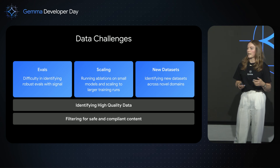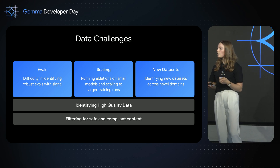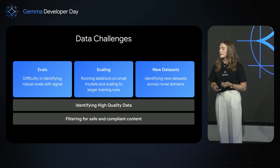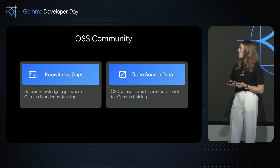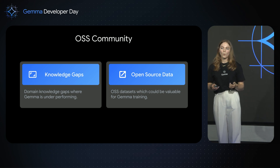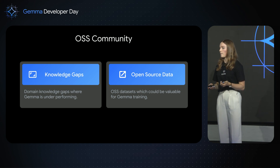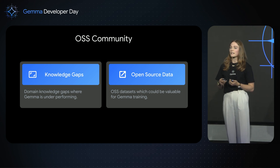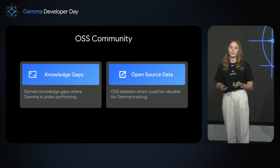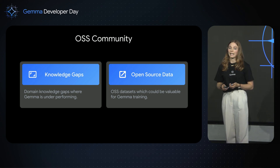As we think about Gemma 3 and beyond, we want to make sure the models we're releasing continue to get better — more knowledge, expertise, and understanding of different concepts. And this is where all of you enter. As an open source community, we want to understand your experiences developing on Gemma: where is Gemma performing well, where is it underperforming, what niche domains are you interested in where Gemma doesn't have the knowledge, and what open source datasets have you used or built that could be integrated into Gemma?